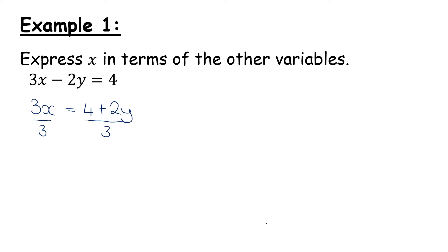These effectively cancel. On this side, I'm just left with an x, and I'm left with 4 plus 2y over 3. There's no need to clean that up further — that's absolutely fine. We have expressed x in terms of the other variables. We're just getting x on its own.